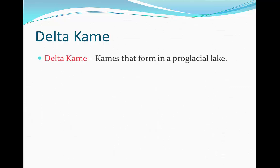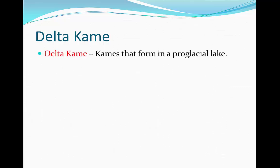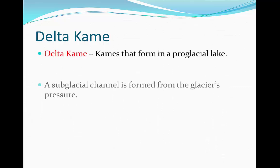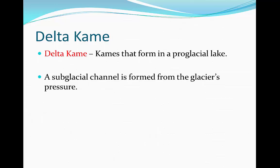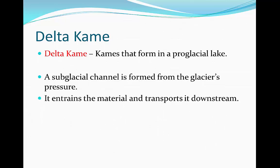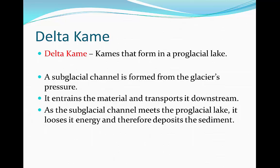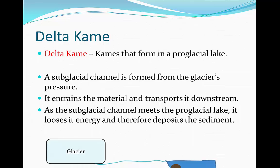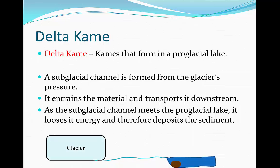Delta kames. Delta kames are kames that form in proglacial lakes. A subglacial channel is formed from the glacier's pressure. It entrains material and transports it downstream. As the subglacial channel meets the proglacial lake in front of it, it loses all its energy and therefore deposits its sediment, hence forming a delta kame.